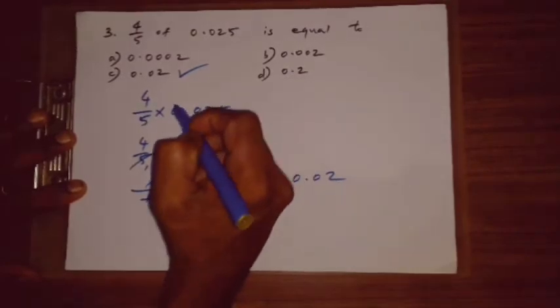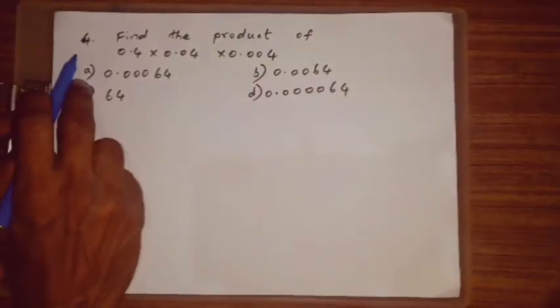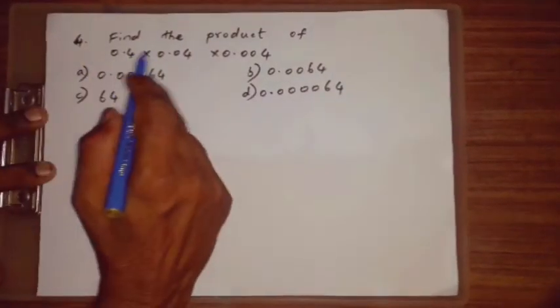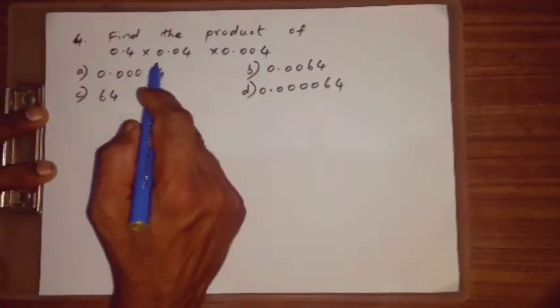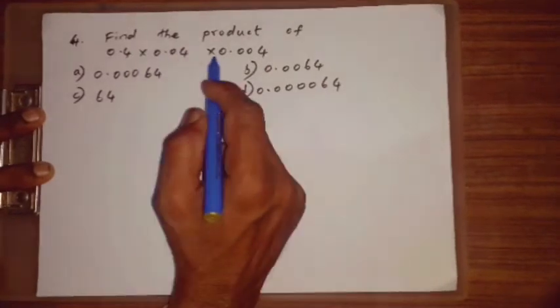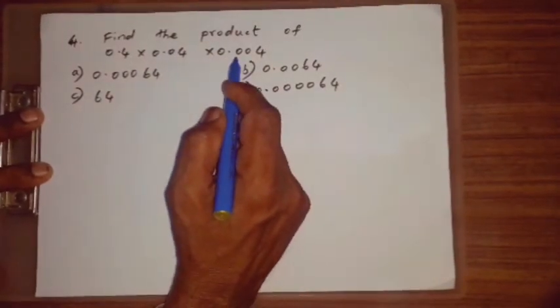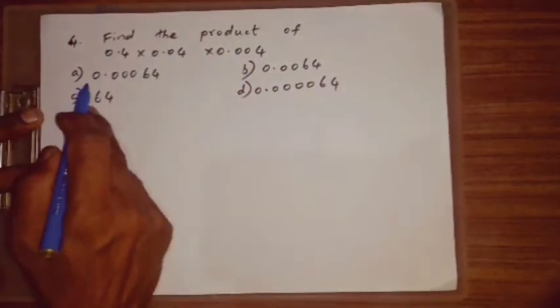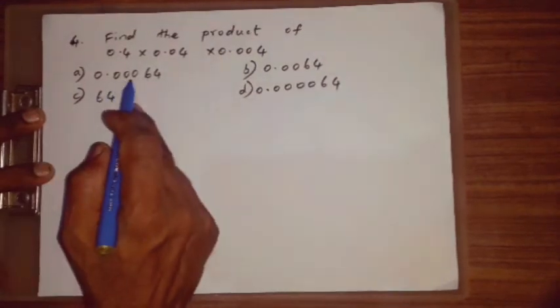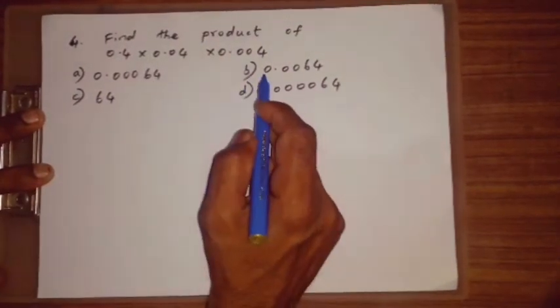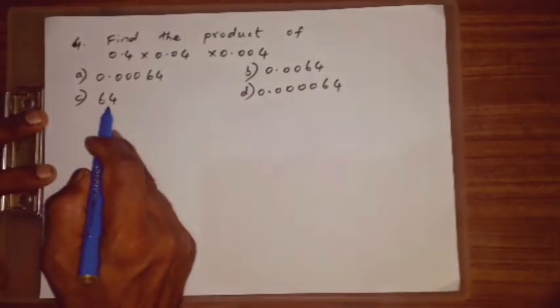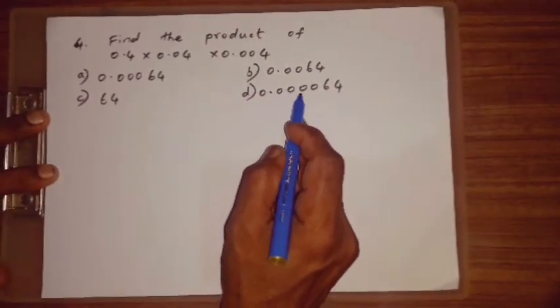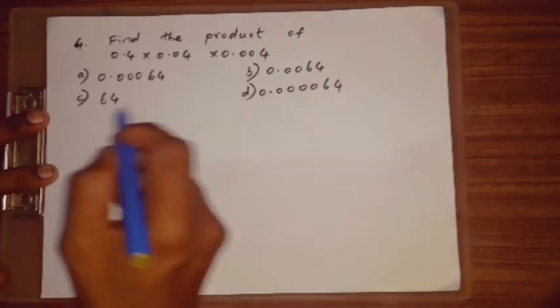Question number 4. Find the product of 0.04 multiply 0.004. A. 0.0064. B. 0.0064. C. 0.0064. D. 0.000064. How to find.